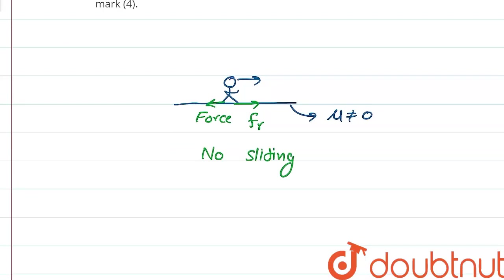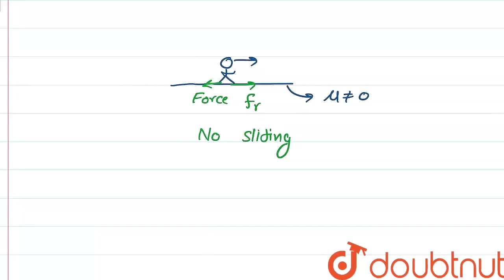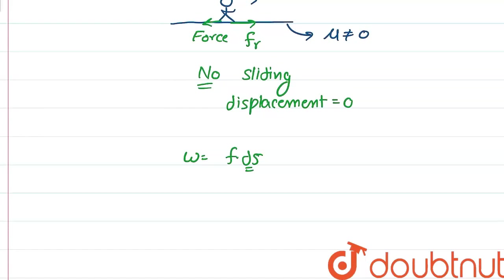That means the displacement is not in the direction of force. So we can say if there is no sliding, then the displacement is zero. We know that work done is f dot ds, where ds is the displacement. If ds is going to be zero, then work is also going to be zero.